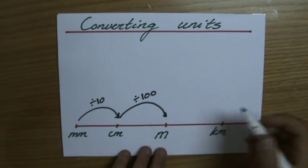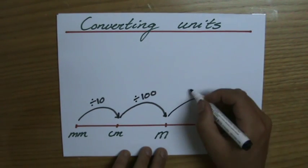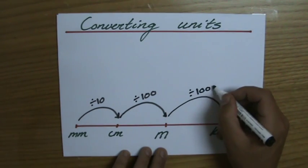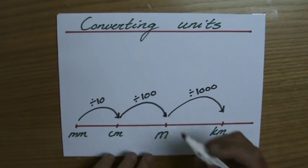and on. And from meters to kilometers you would have to divide by 1000. So divide by 10, divide by 100, by 1000. So if you